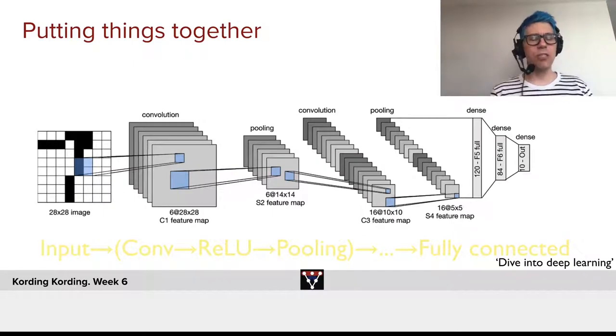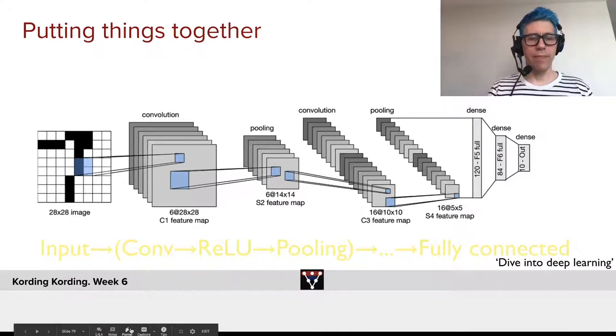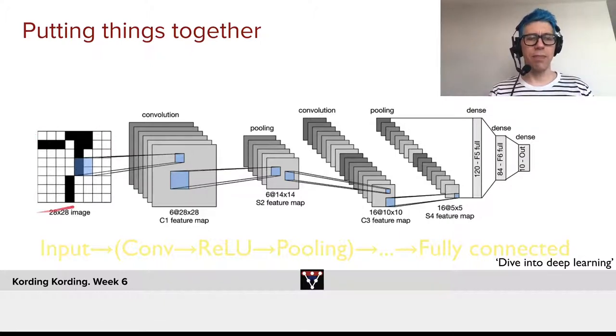So, let's just recapitulate how architectures of ConvNets look like. We might have an image as input, and this image might be 28 by 28 pixels, as in the case of MNIST.